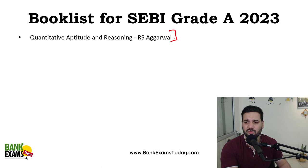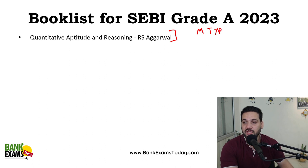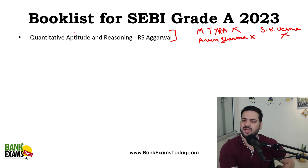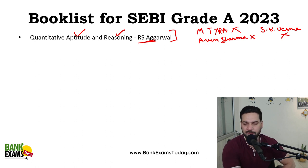RS Agarwal's book is more than sufficient for you. A lot of questions are there, a variety of questions are there. There is another book called M Tyra — it's a very confusing book, I do not recommend that anymore. M Tyra, Arun Sharma, Sarvesh Kumar Verma — I do not recommend all these books for quantitative aptitude. Just follow RS Agarwal, simple. And also for the reasoning, follow RS Agarwal's book. These books are good enough for quantitative aptitude and reasoning ability. I personally recommend them.